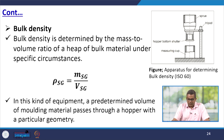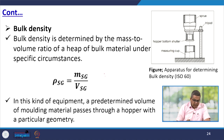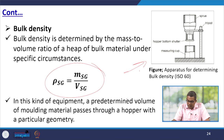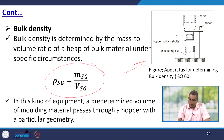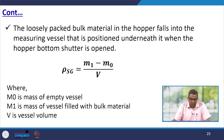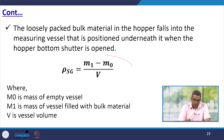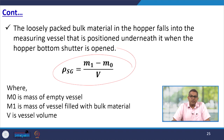Bulk density is usually determined by the mass-to-volume ratio of a heap of bulk material: rho_sg equals m_sg over V. This is the typical apparatus for determining bulk density as per ISO 60. A predetermined volume of molding material passes through a hopper with a particular geometry — including a hopper bottom shutter, measuring cup, screws, and tripod. The loosely packed bulk material falls into the measuring vessel positioned underneath when the hopper bottom shutter is opened. Rho_sg equals (m1 minus m0) over V, where m0 is the mass of the empty vessel, m1 is the mass filled with bulk material, and V is the vessel volume.